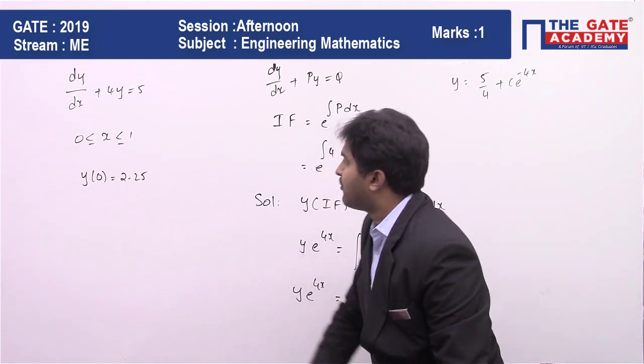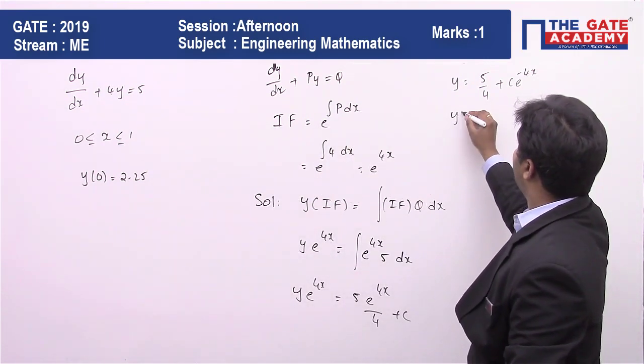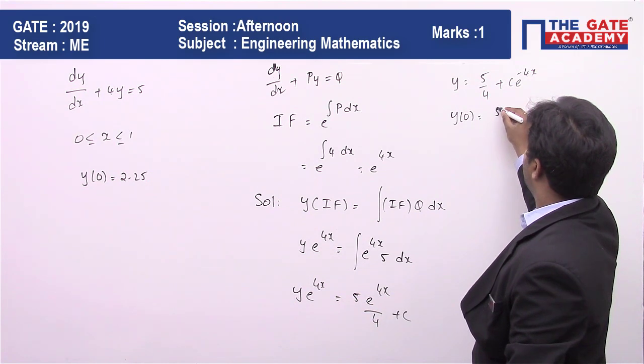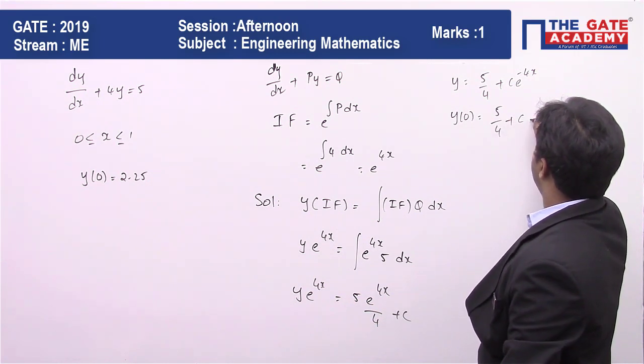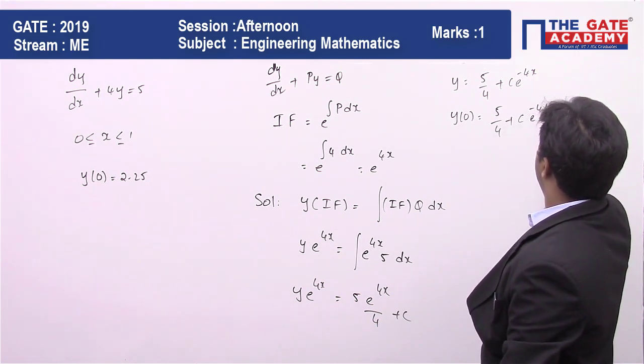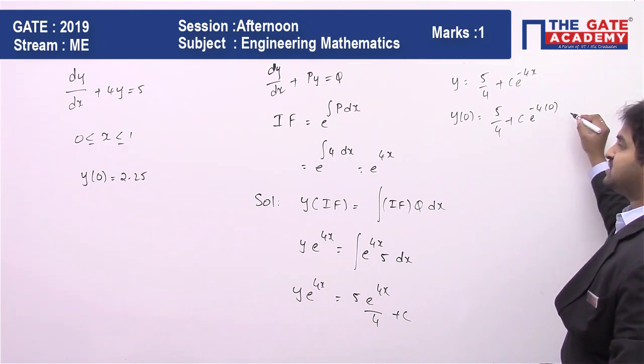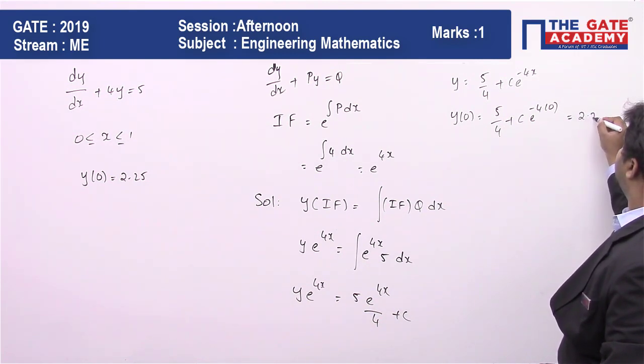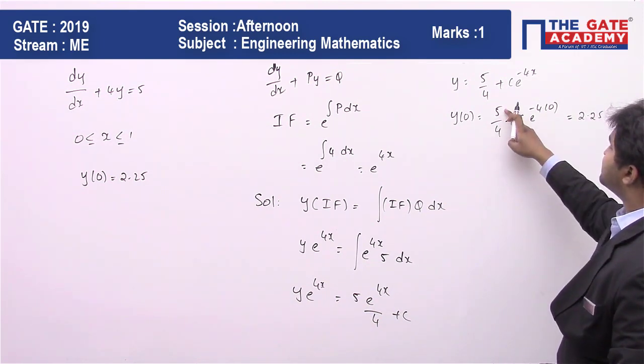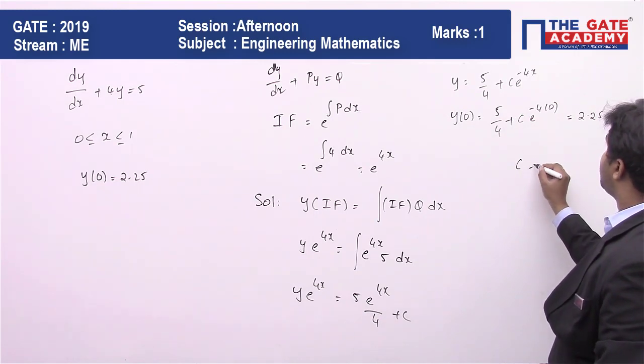Now let me apply the initial condition at x = 0: 5/4 + ce^(-4×0). This value is equal to 2.25. So this is nothing but 1.25.